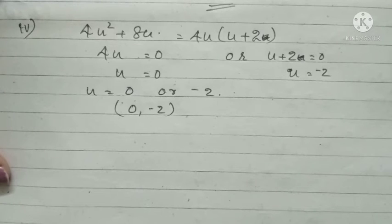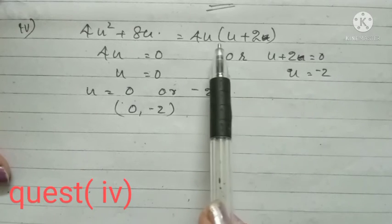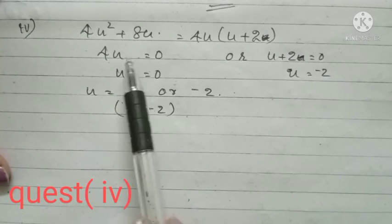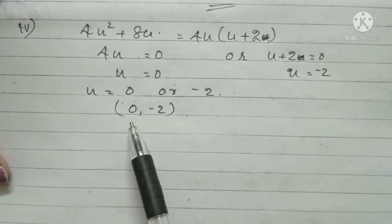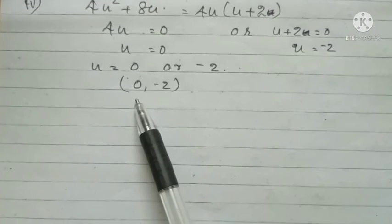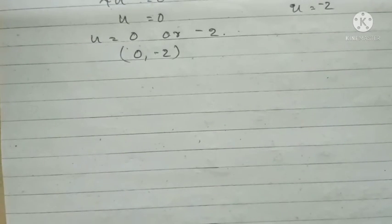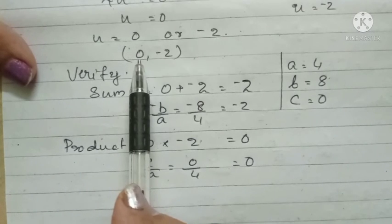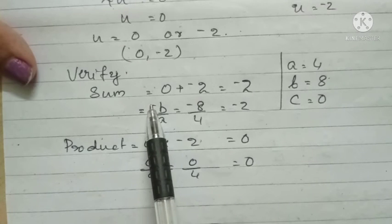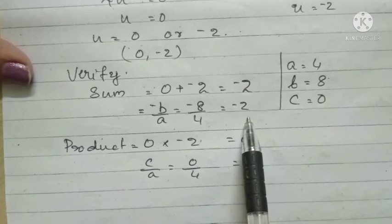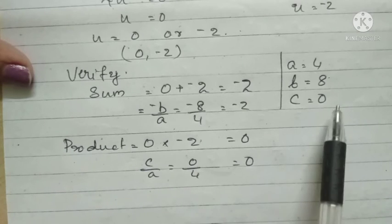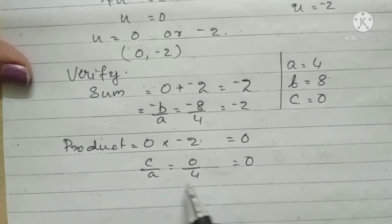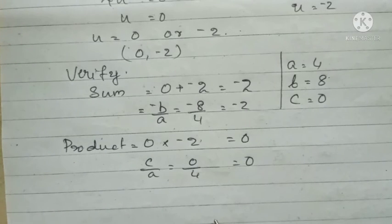Question 4: 4u² + 8u. Taking 4u as common: 4u(u + 2). Either 4u = 0, giving u = 0, or u + 2 = 0, giving u = minus 2. So the zeros are 0 and minus 2. Verification: sum = 0 + (minus 2) = minus 2. By formula, minus B by A = minus 8 by 4 = minus 2. Product = 0 × (minus 2) = 0. By formula, C by A = 0 by 4 = 0. Both verified.